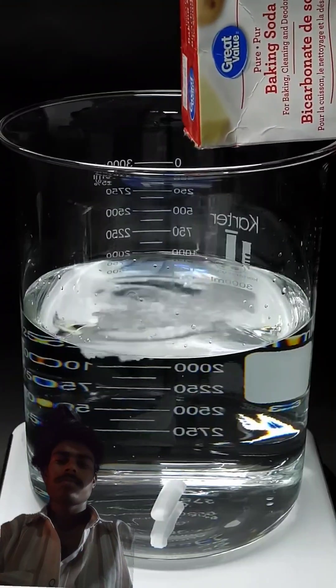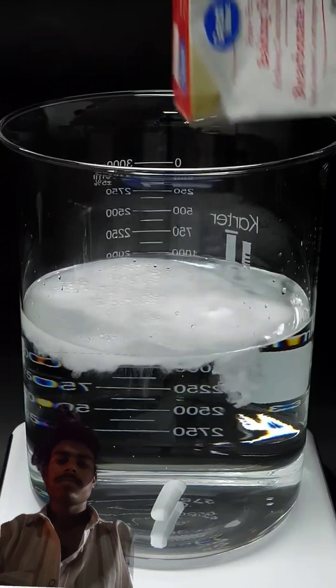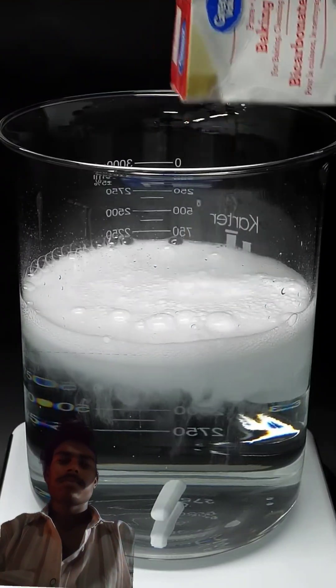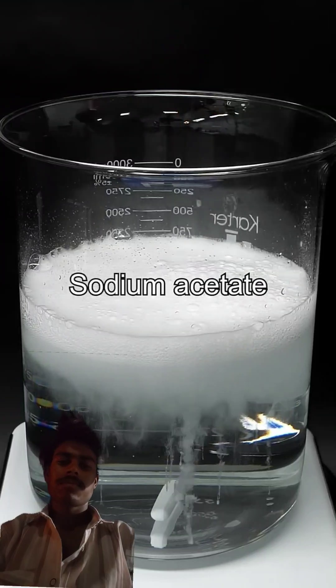Then into this, I'll add some regular baking soda. This reacts almost immediately with the vinegar, which is acetic acid, and it turns it into sodium acetate.